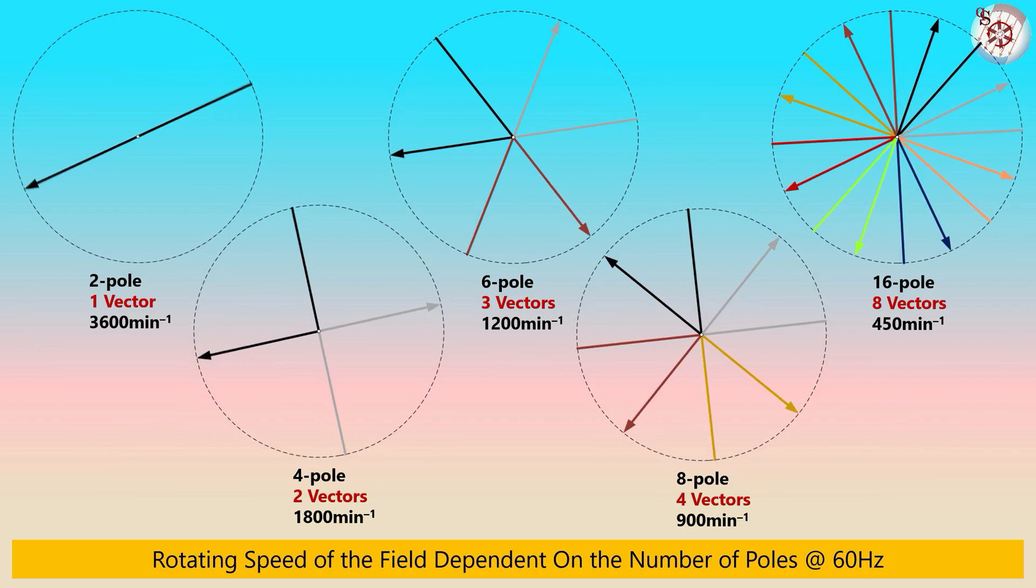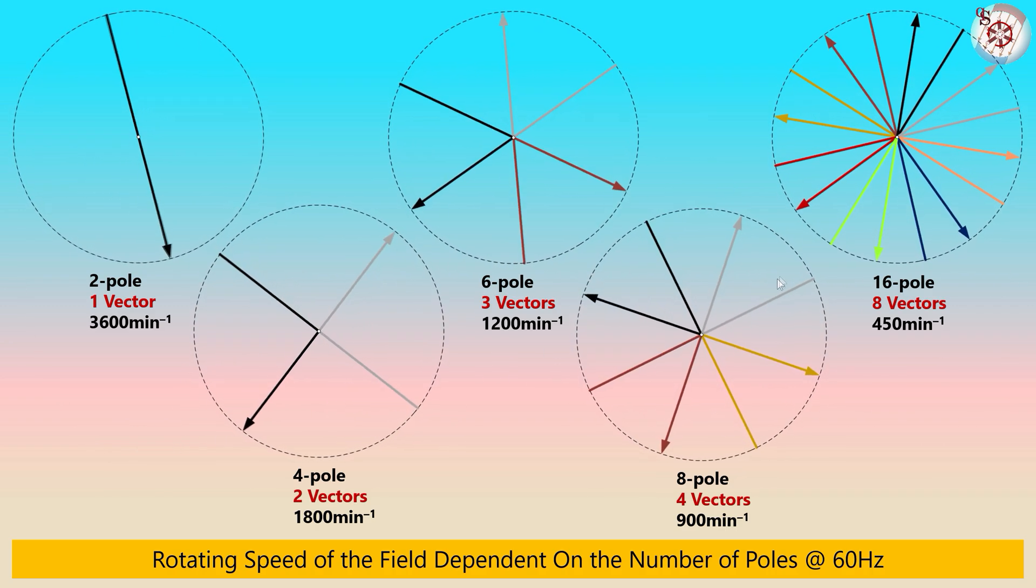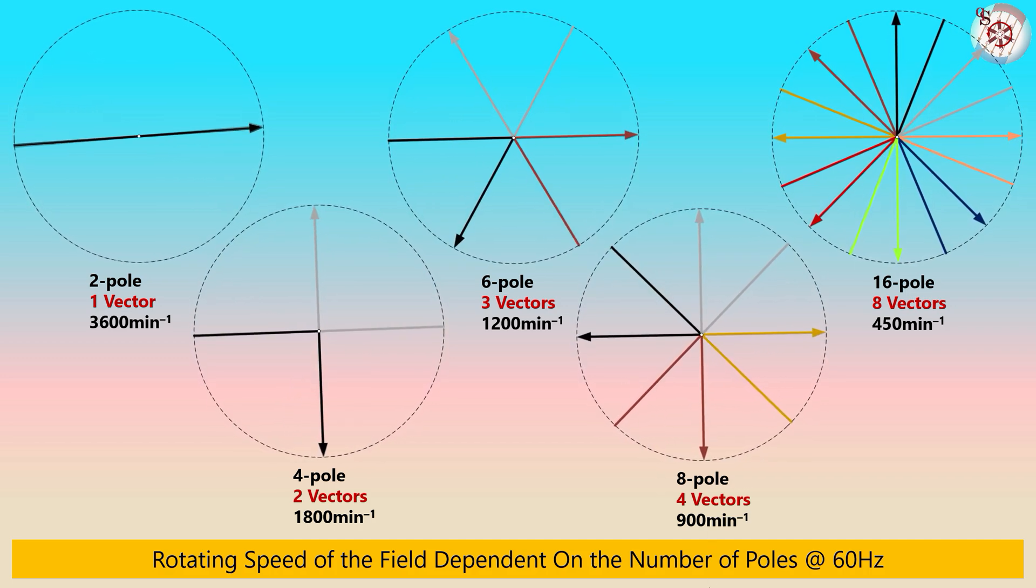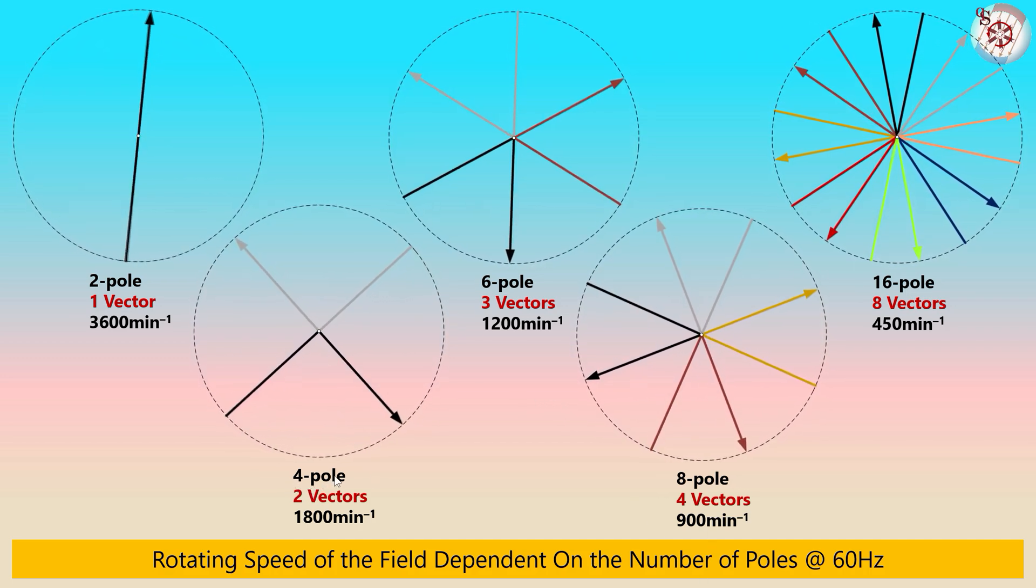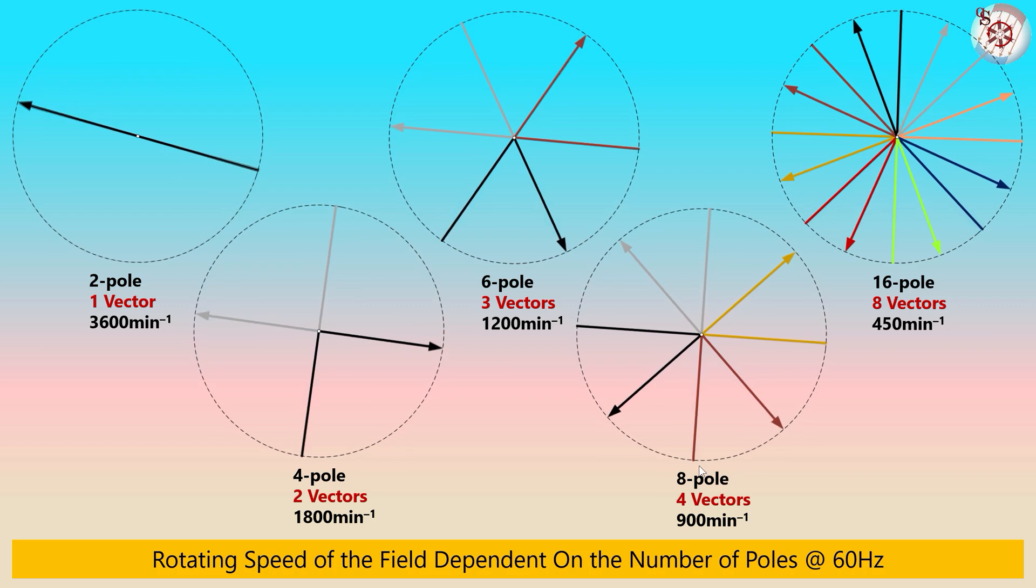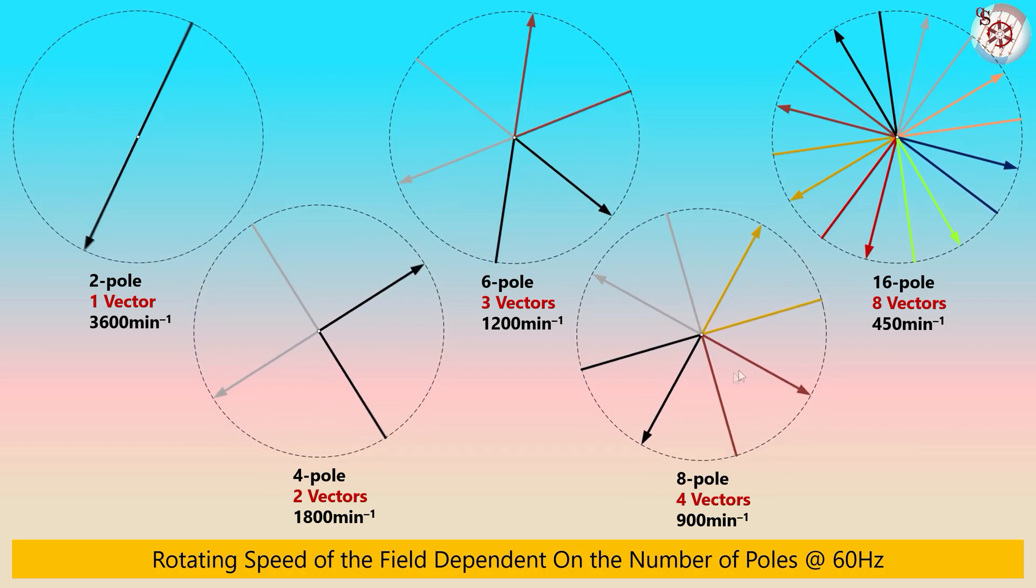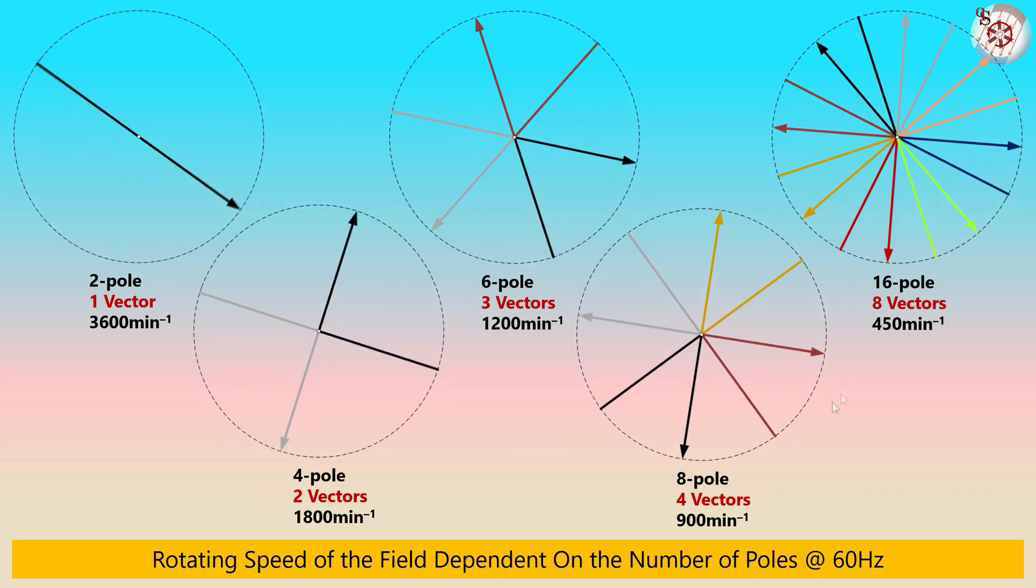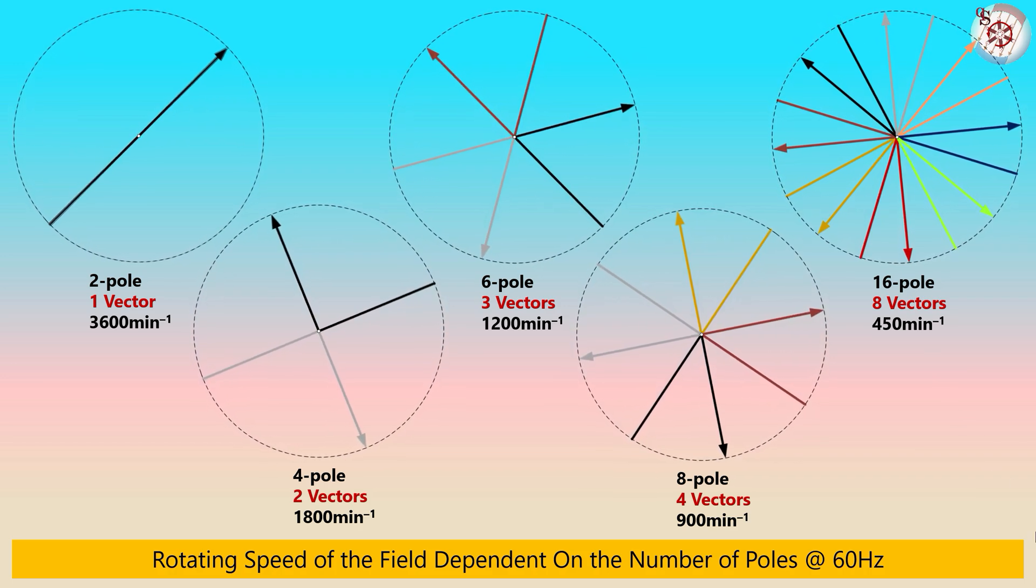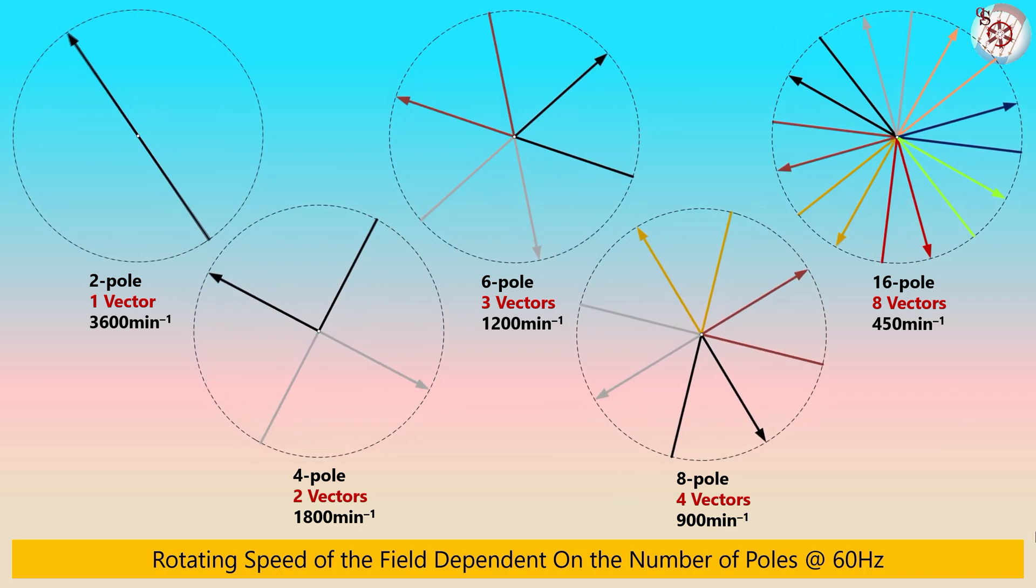In that way, not only four-pole machines are realized, but also six-pole, eight-pole, and 16-pole machines with three, four, or eight voltage vectors.